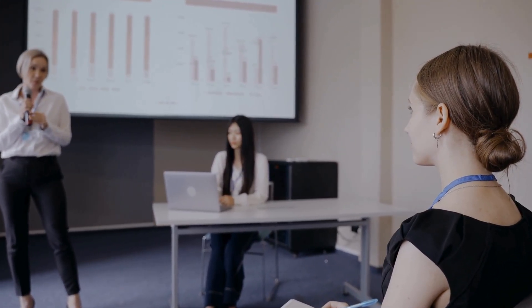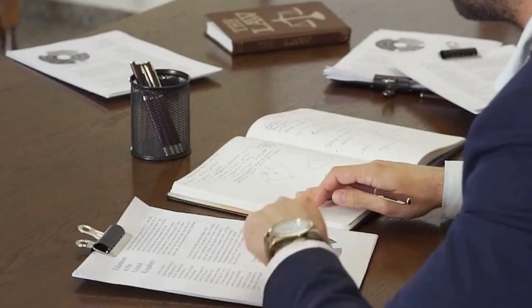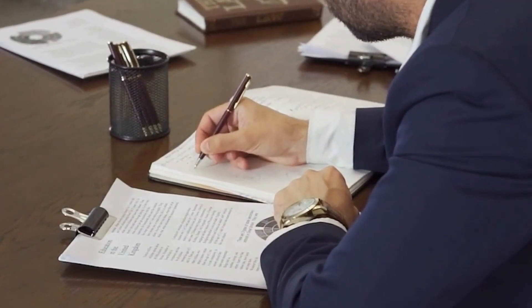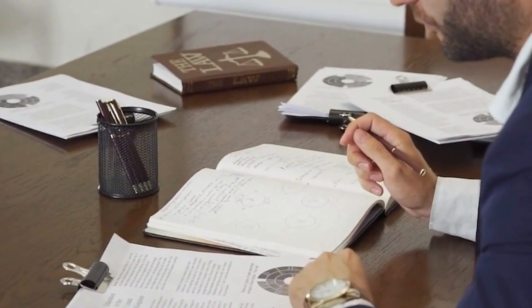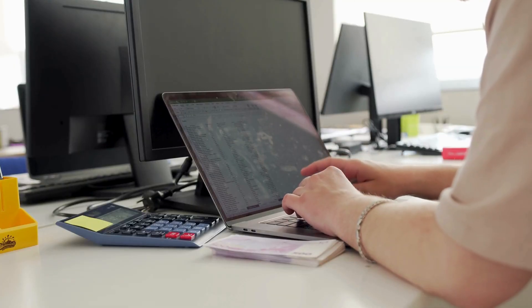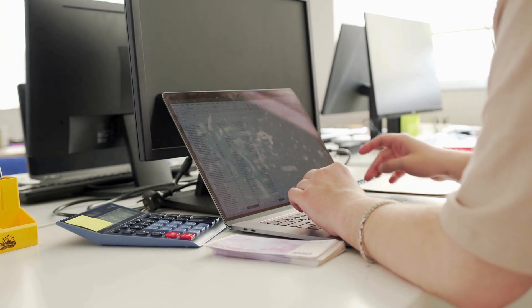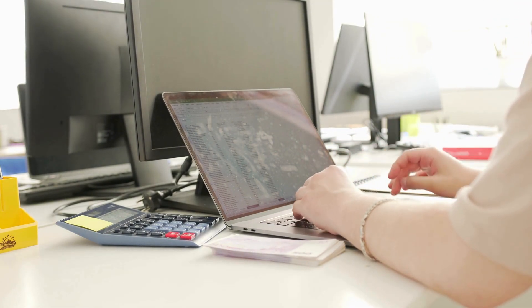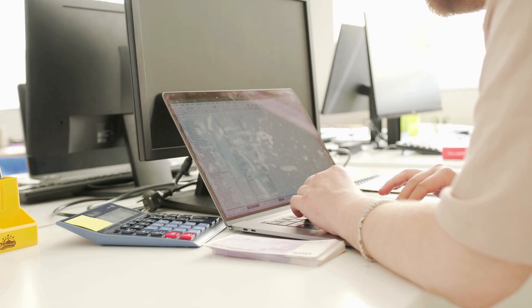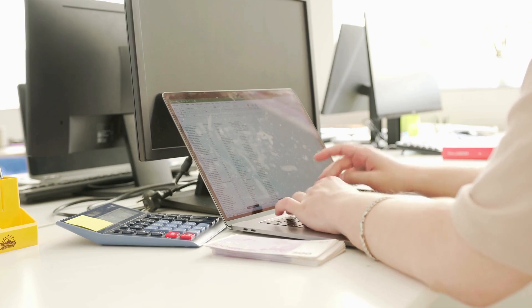Step 2: Collect Requirements. Step 3: Define the Scope. Step 4: Create the Work Breakdown Structure. Step 5: Validate the Scope. Step 6: Control Scope. Challenges in scope management include scope creep and miscommunication between stakeholders and teams.